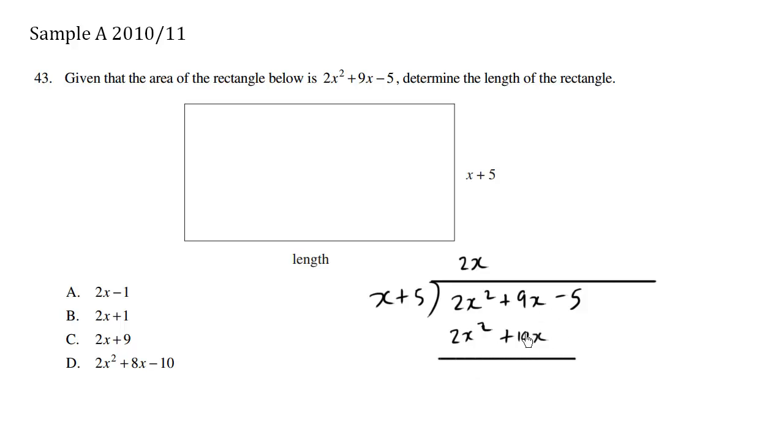This is where we subtract. When we subtract this minus this, we get the negative 5 drops down. 9 minus 10 is going to be negative 1. So this is going to be negative x. And then this here is going to be 2x squared minus 2x squared is 0.